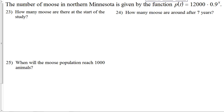Let's take a look at a couple of word problems here. It says the number of moose in northern Minnesota is given by the function P(t) equals 12,000 times 0.9 to the t power. Number 23 says how many moose are there at the start of the study. The start of the study is at time 0. So P of 0 is what we want to figure out.